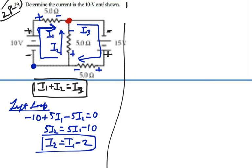Let's look at the outer loop. And walking from the same spot, I'm going to have a negative 10 plus 5I1, walking all the way around to the right.